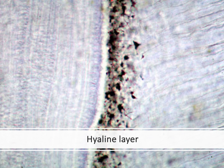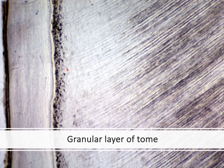Under the hyaline layer we see black areas, which are the terminal branching of the dentinal tubules. In ground sections, when they are filled with air, they look black under the microscope — we call them the granular layer of Tomes. These are not interglobular dentine. In the theoretical lecture we noted that terminal branching in the root forms loops and is much more extensive than in the crown, which is why we can see them filled with air in the root but not in the crown.